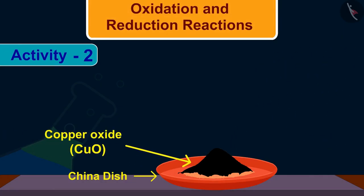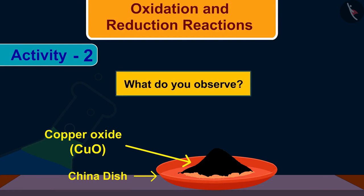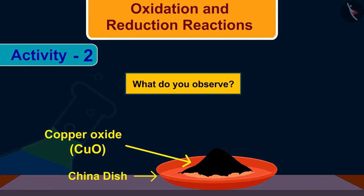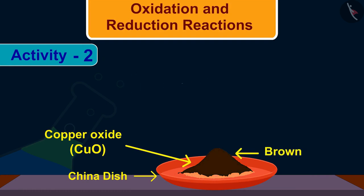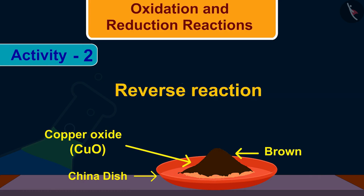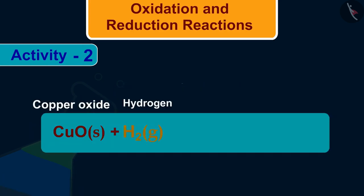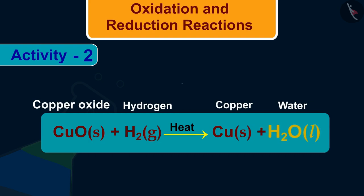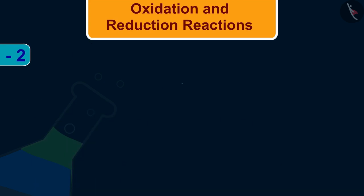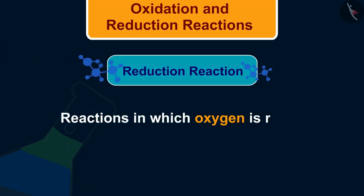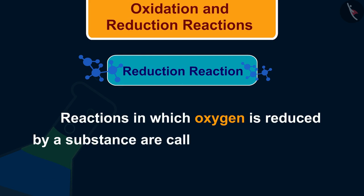If hydrogen gas is passed over this heated material CuO, what do you observe? You will observe that the black coating on the surface turns brown. This is because the reverse reaction takes place and copper is obtained. There is a loss of oxygen in the copper oxide — in other words, copper oxide is reduced. A reaction in which oxygen is removed from a substance is called a reduction reaction.